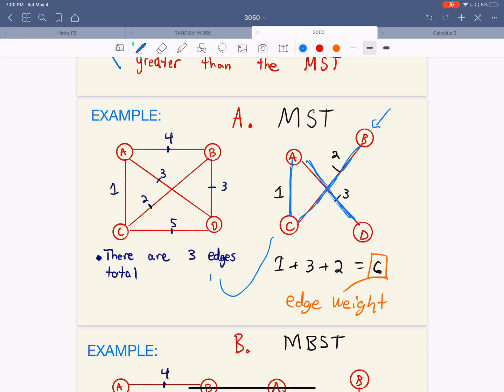So there's three edges total in this minimum spanning tree. But if we add the weight up, so if we add one plus two plus three, we're going to end up getting six. So that's the edge weight.